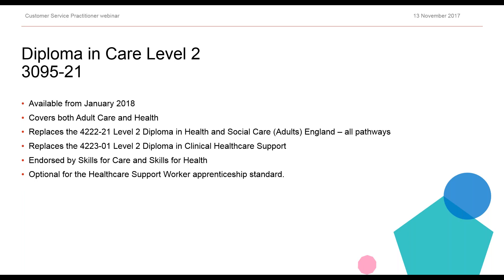First of all, looking at the Diploma in Care Level 2. The six-digit number that we love so much at City and Guilds is there for you to refer to and will be helpful in searching our website for the new web pages. The qualification is due to be available in January of next year and it covers both adult care and health. It therefore replaces two qualifications: the Level 2 Diploma in Health and Social Care Adults in England and also the Level 2 Diploma in Clinical Healthcare Support. This qualification has been endorsed by both Skills for Care and Skills for Health and it is an optional qualification for the healthcare support worker apprenticeship standard.